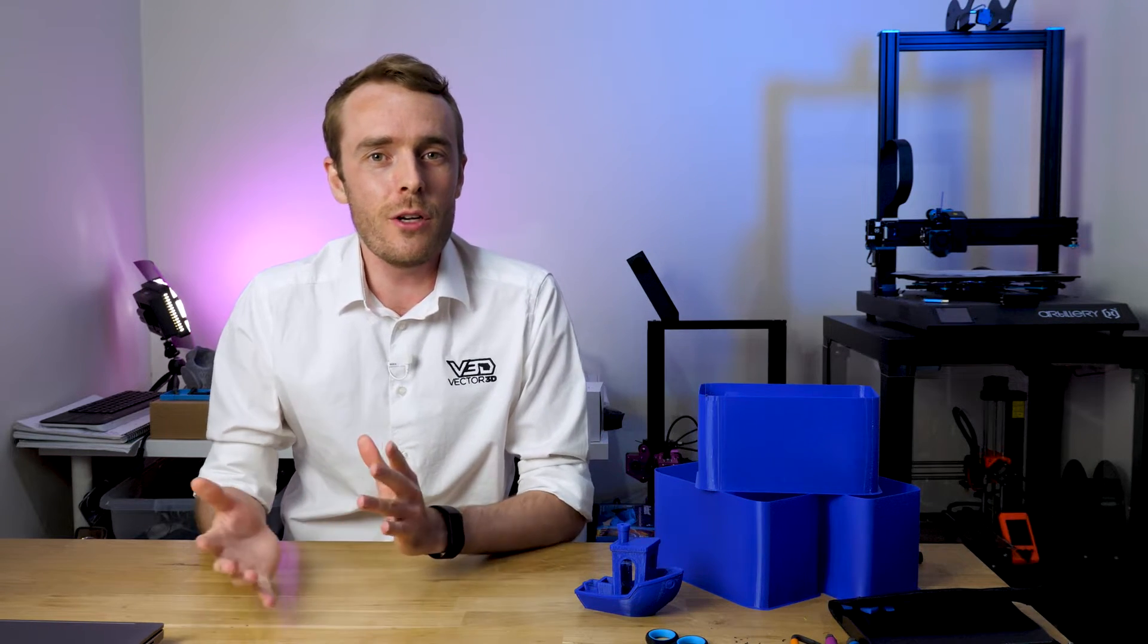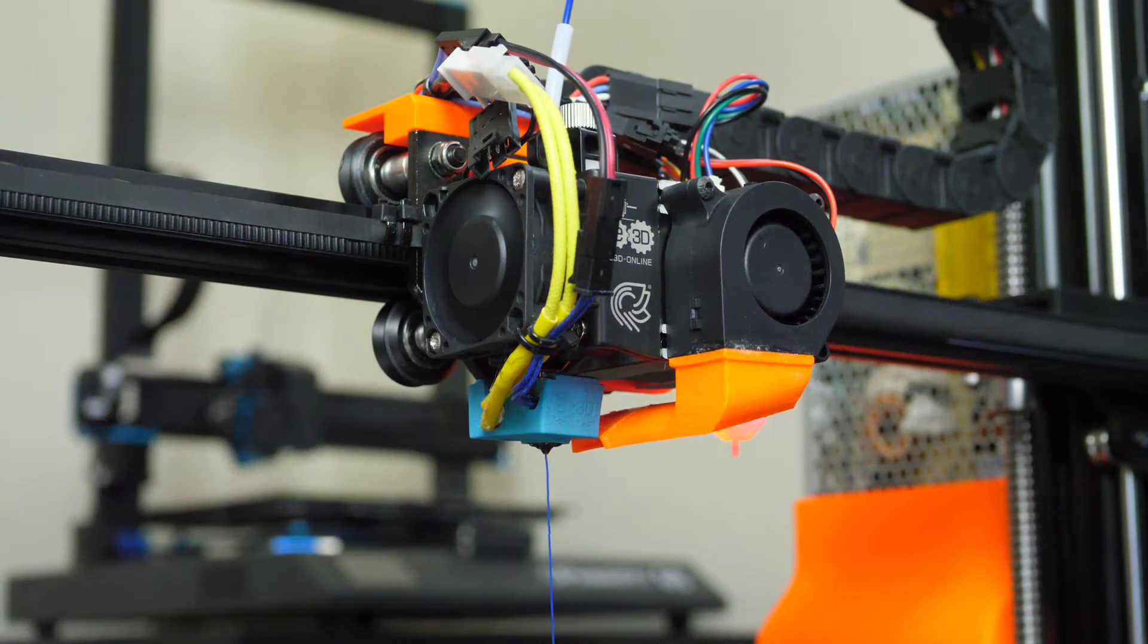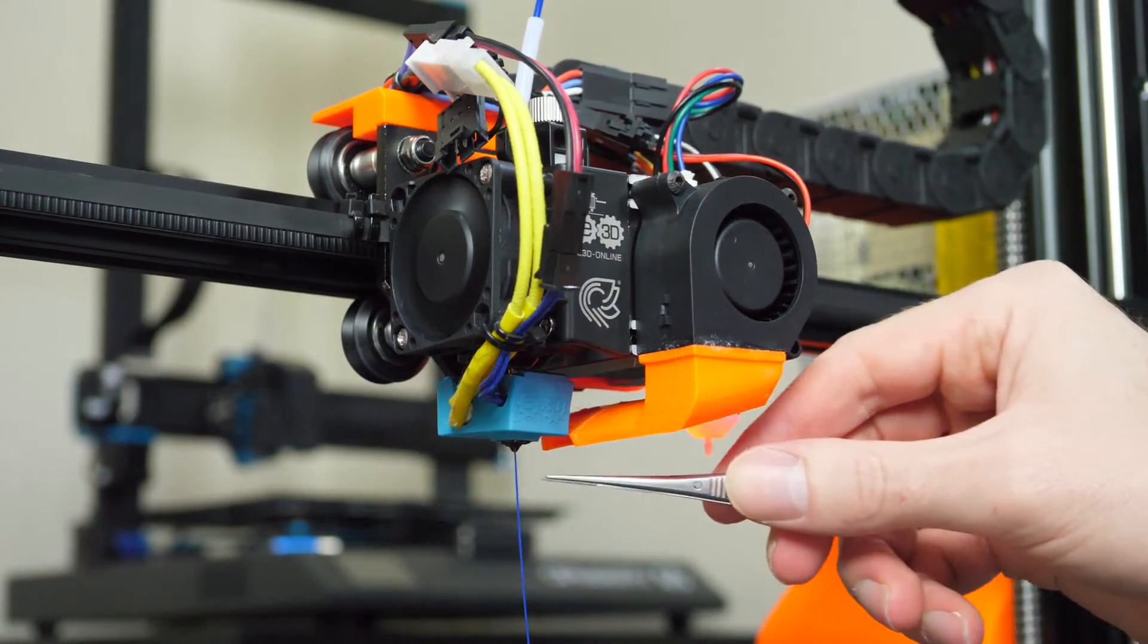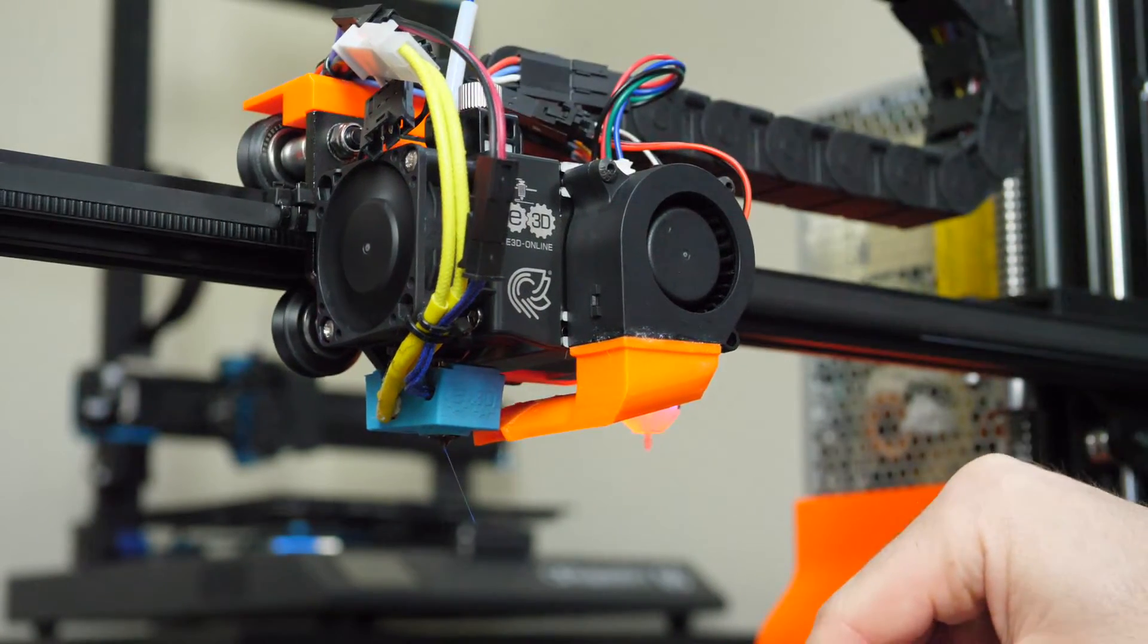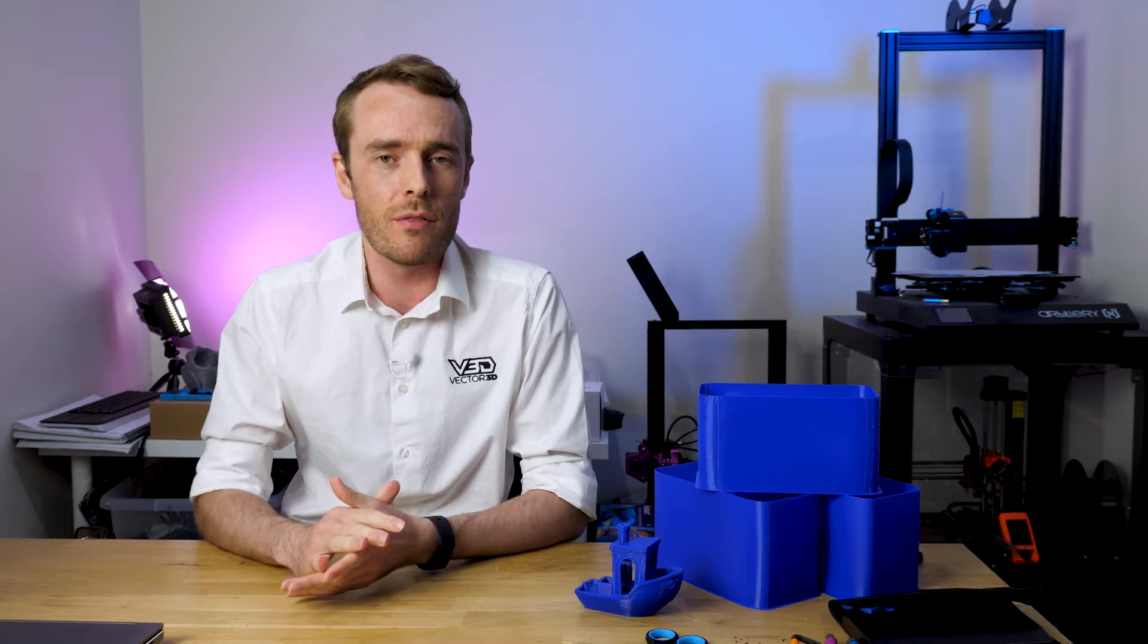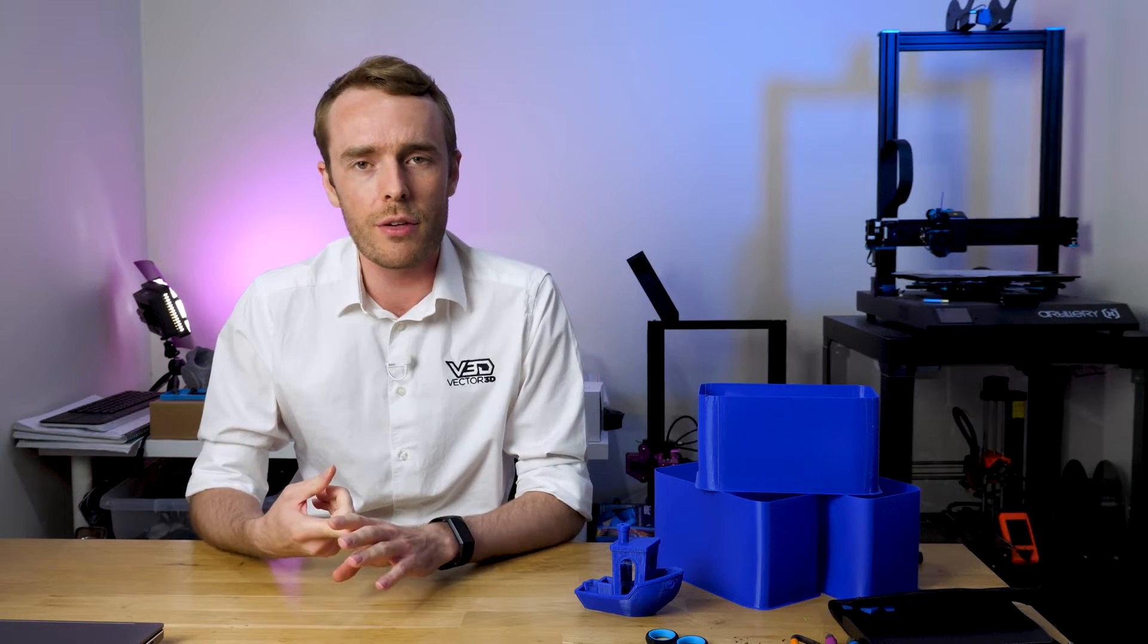In the last episode on testing, we looked at maximum flow rate and printing speed for the Hemera hotend and extruder. We found that you could print up to 10.9 millimeters cubed per second with PLA at 220 degrees celsius, which is approximately equivalent to 94 millimeters per second with a 0.3 layer height and 0.45 millimeter line width.